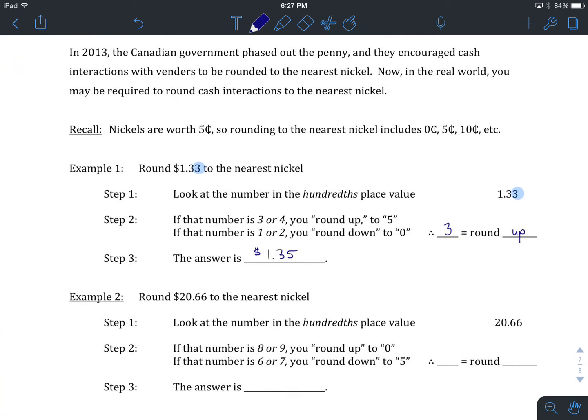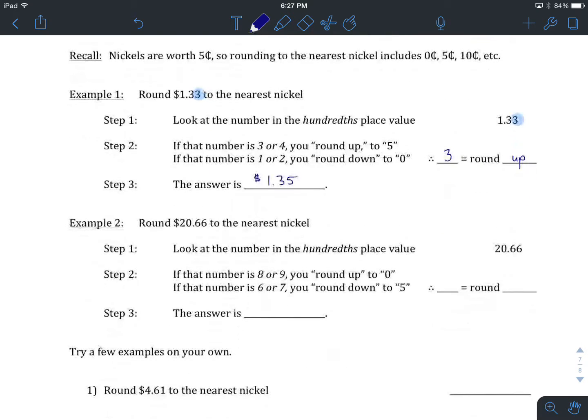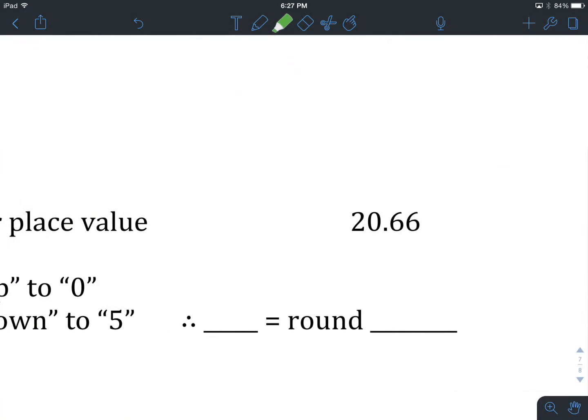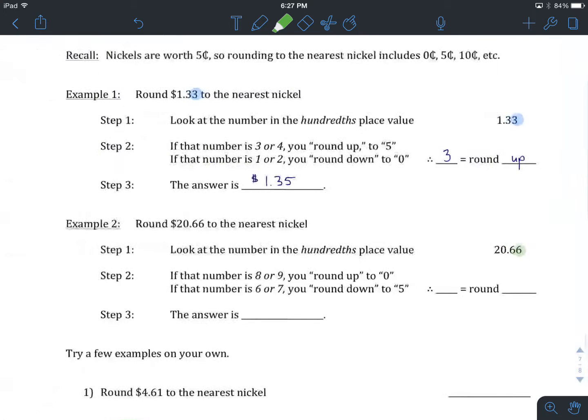Let's have a look at the next example, example number 2. Round $20.66 to the nearest nickel. Same first step, we're going to start by identifying the hundredth place value. So there it is, hundredths, 2 to the right of our decimal point. This time it's a 6.